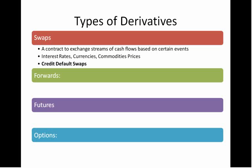On the other hand, forwards are contracts to buy or sell assets at a future date. So instead of exchanging cash flows, you're actually exchanging the underlying assets. Forwards are not standardized or regulated on major exchanges, so you can structure them pretty creatively, however you want.